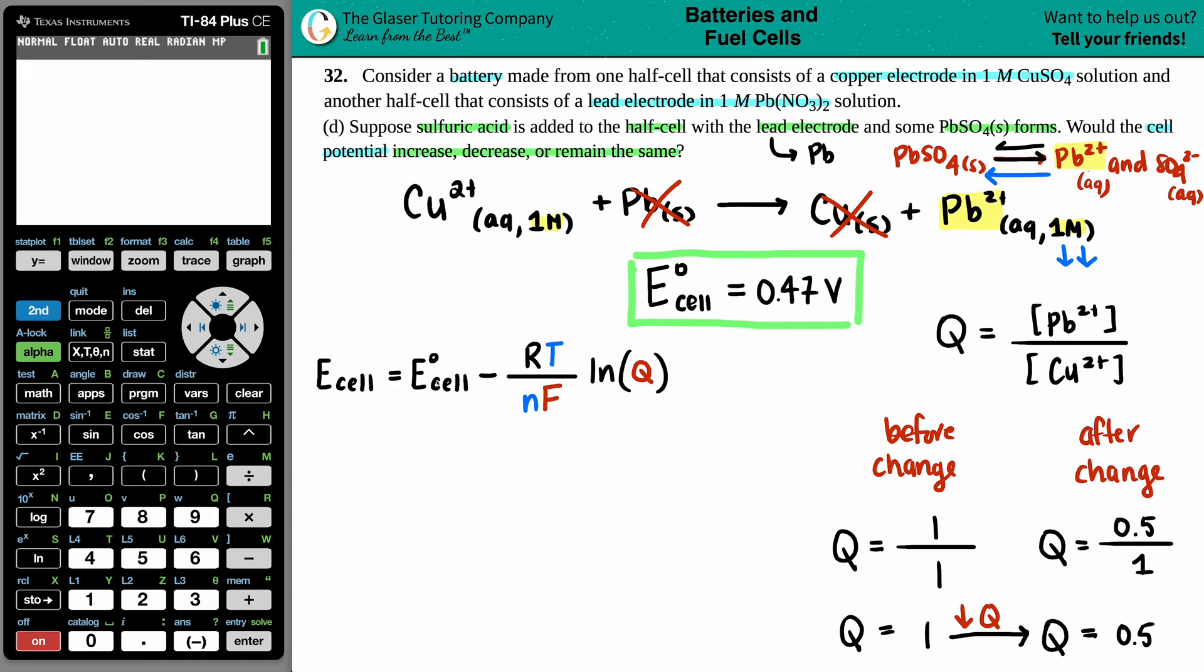So let's just basically say, okay, this I don't really need because we don't need to find an exact number. We just need to see if it will increase, decrease, or remain the same. So we're only going to basically focus on E_cell equals the standard cell minus ln of Q.